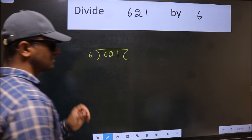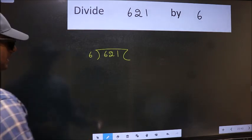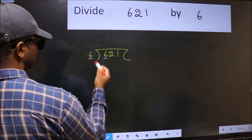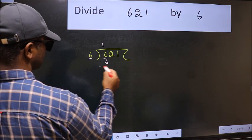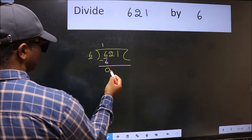This is your step 1. Next, here we have 6 and here also 6. When do we get 6 in the 6 table? 6 once 6. Now we should subtract. We get 0.